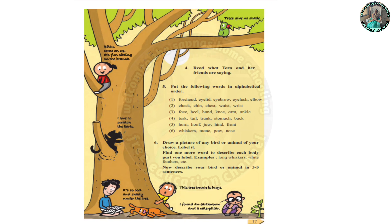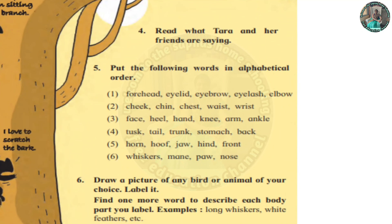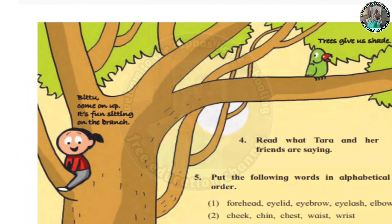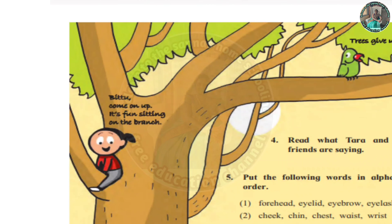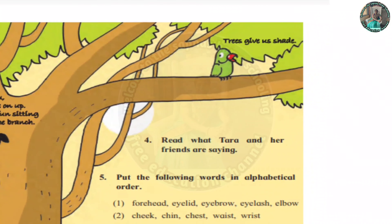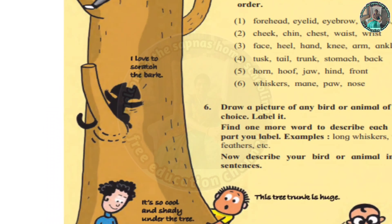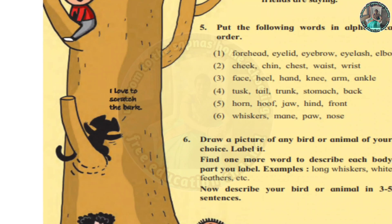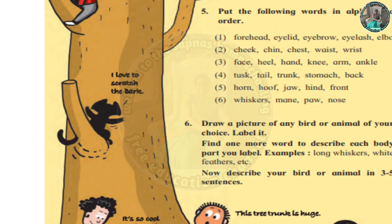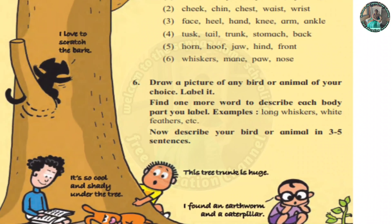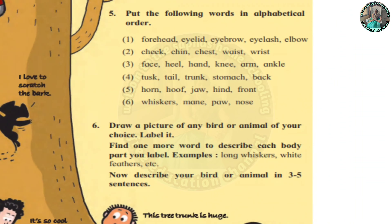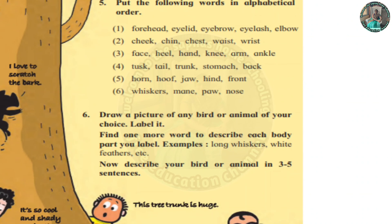Question 4: Read what Tara and friends are saying. Bittu says: Come on up, it's fun sitting on the branch. Tara says: Trees give us shade. Another friend says: I love to scratch the bark. From the treetop: So cool and shady under the tree. This tree trunk is huge. Toto says: I found an earthworm and a caterpillar.